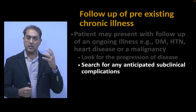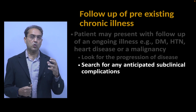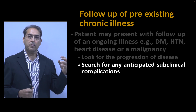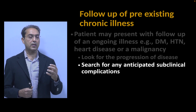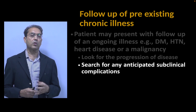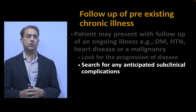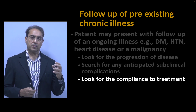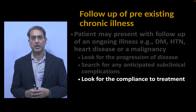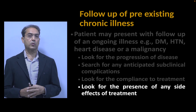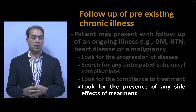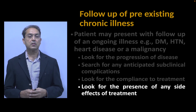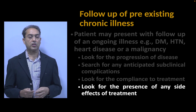Then look for the presence of any subclinical complications. For example, a diabetic may have diabetic retinopathy without knowing it. Assess for complications which have not yet manifested clinically — anticipated subclinical complications. Also assess treatment compliance, which is important for controlling many diseases. Look for side effects of ongoing treatment — for example, Ethambutol (Myambutol) used in anti-tuberculous treatment may cause blindness, with color blindness as the first manifestation. Monitor compliance and side effects.